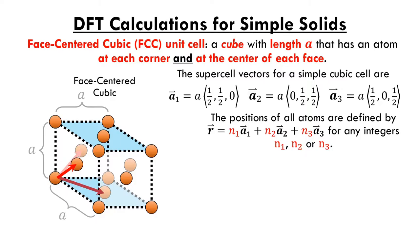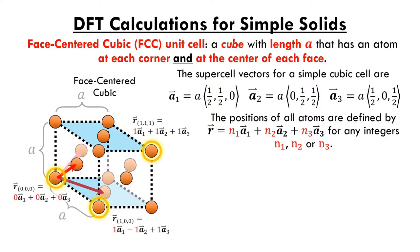We'll look at what combinations of supercell vectors are needed to describe atomic positions. The atom at R000 is trivial — each coefficient N1 through N3 is simply 0. The atom at R111 can similarly be obtained with coefficients 1, 1, and 1. A bit more interesting is the atom at position R100, which requires coefficients 1, -1, and 1 respectively. I'll leave it to you to find the coefficients required to describe all 14 atoms in the FCC unit cell.